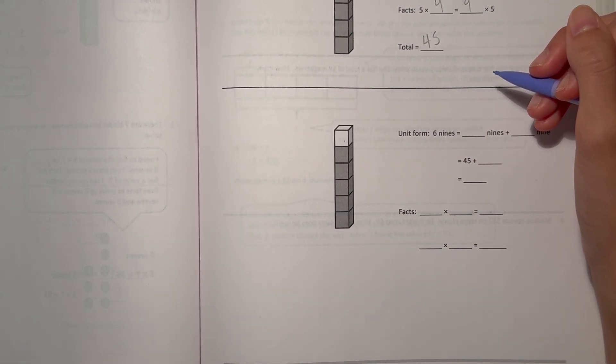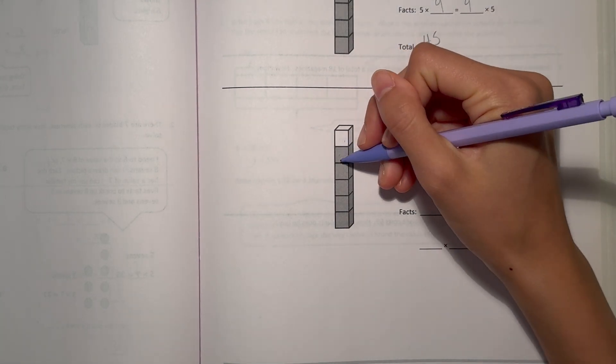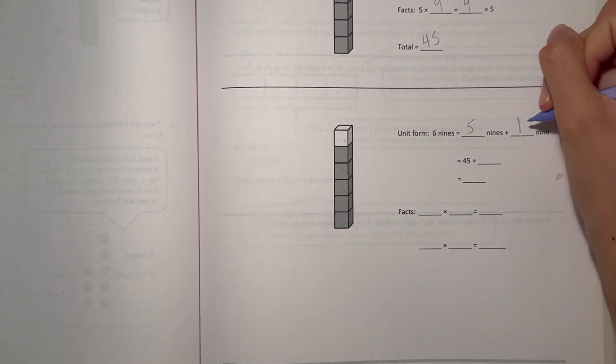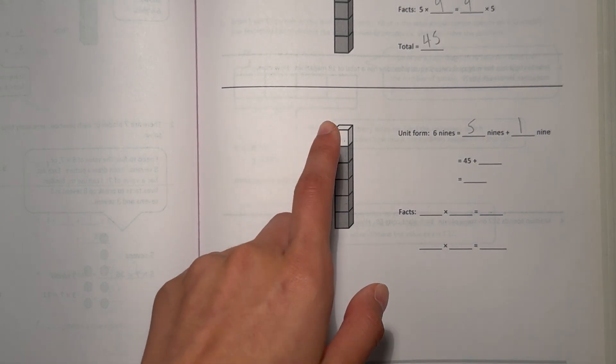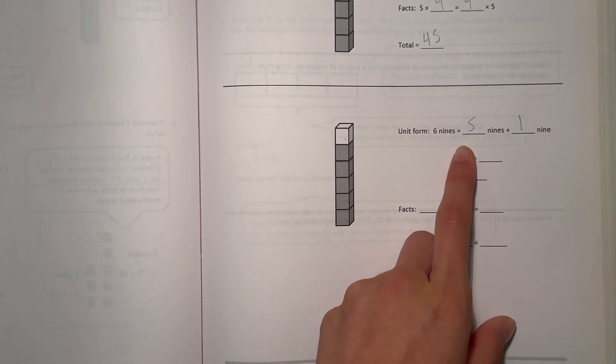So unit form, we have 6 nines, and that's the same as 1, 2, 3, 4, 5 nines plus 1 nine. And we're separating them like this, because that 1 nine is isolated, because it's unshaded. So we're isolating them into 5 and 1, because this is practicing our that 5 facts thing we're about to do on the next page.